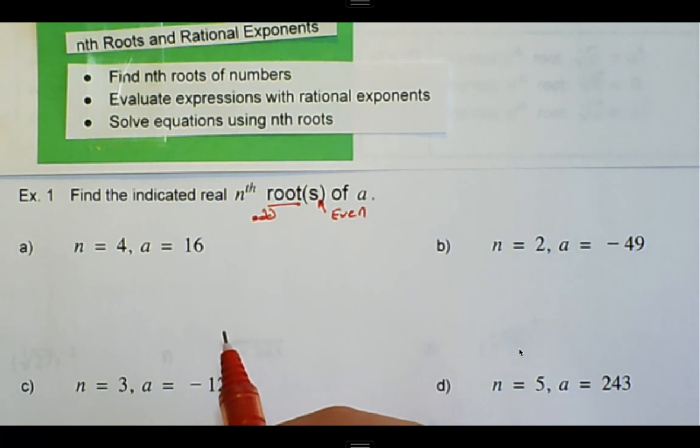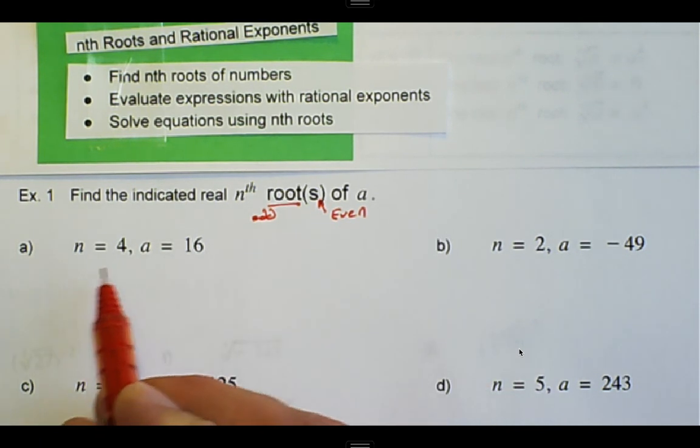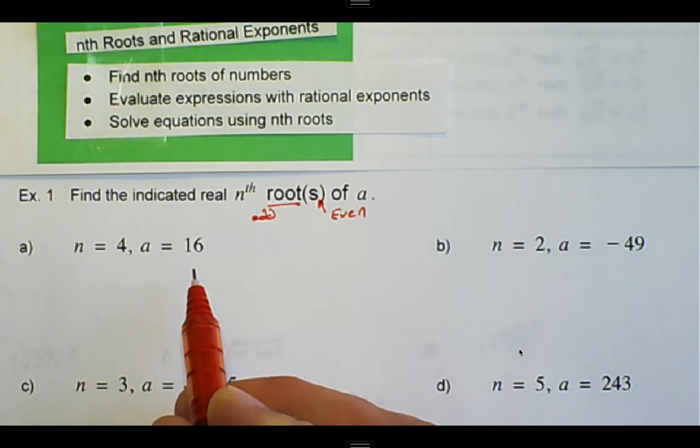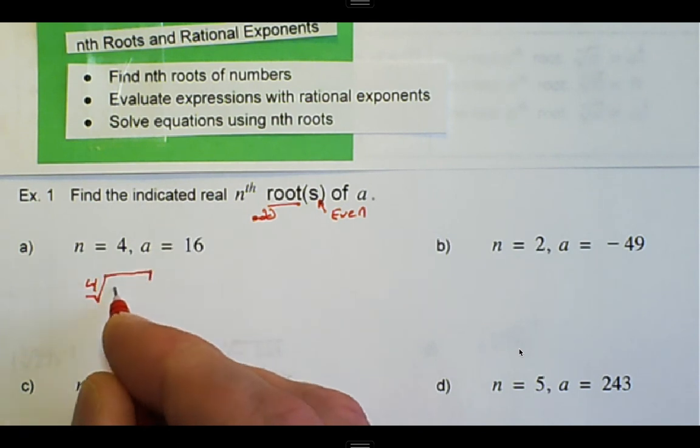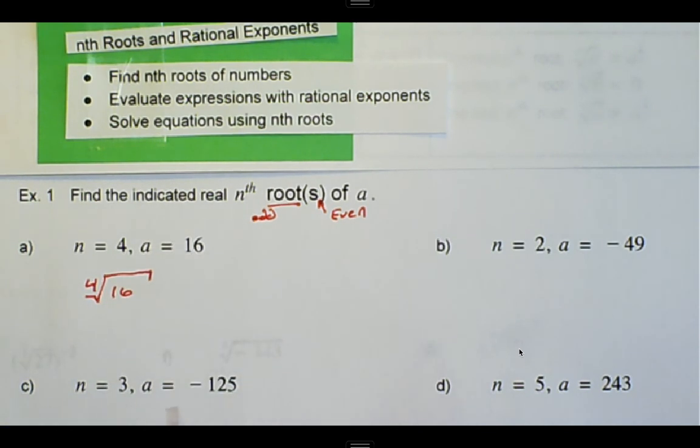For example, first we have the fourth root of 16. So we can rewrite this as the fourth root of 16, and whenever we want to take something out of the radical...